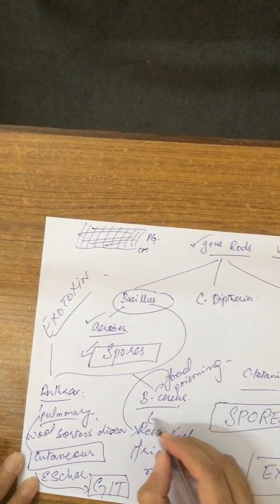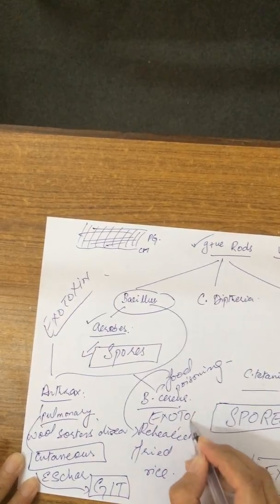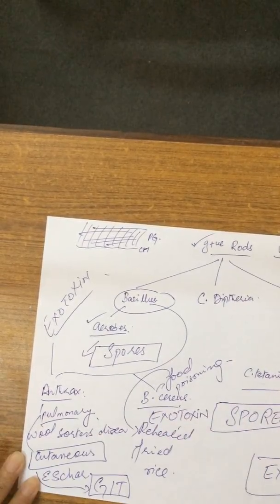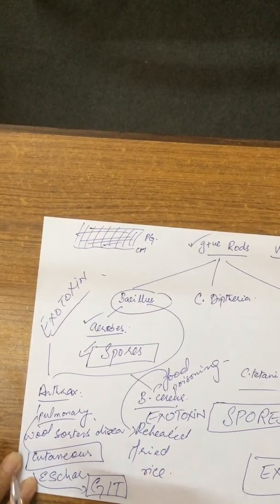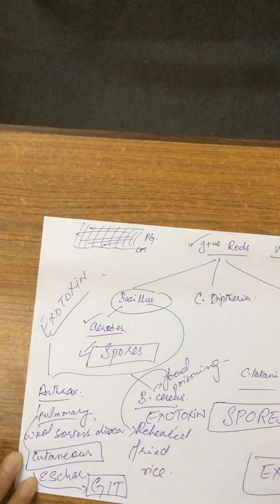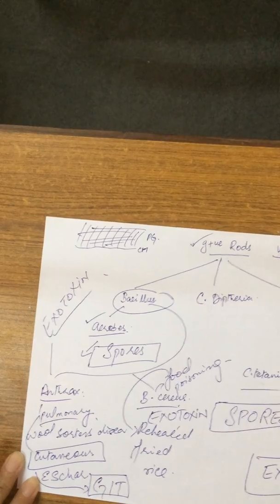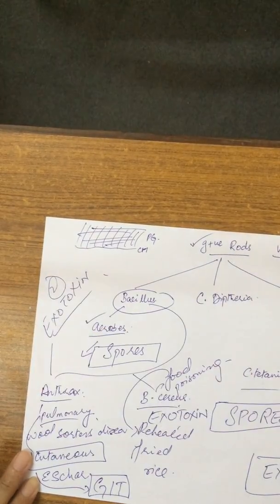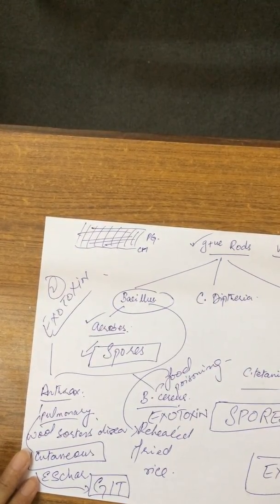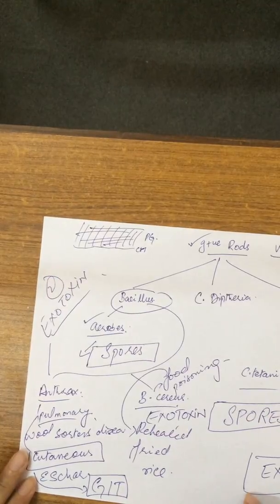Bacillus cereus has its own exotoxin. So we need to memorize the mechanism of actions of five exotoxins: four exotoxins from the Clostridium group and two from the Bacillus group. For the exam, you have to memorize their mechanism of actions.